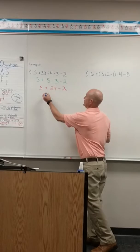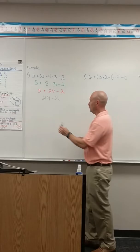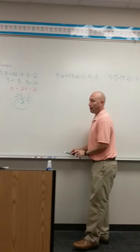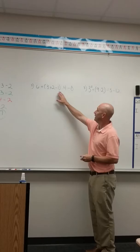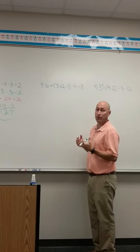And now I'm down to two operations, addition and subtraction. These are interchangeable from left to right. So I'm going to do the addition before the subtraction. 5 plus 24 is 29. And then 29 minus 2 would be 27, which would be our final answer here.